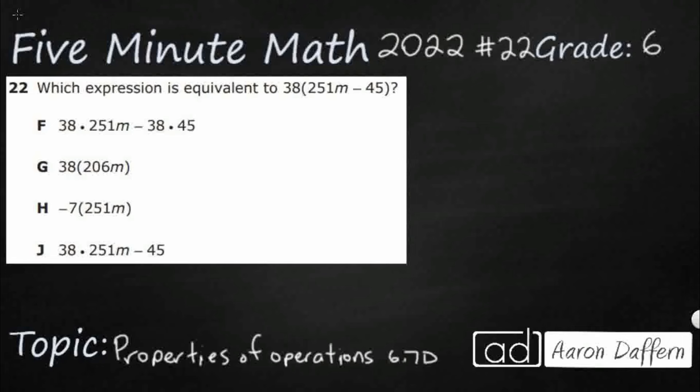So, we have an expression here, 38 times parentheses 251m minus 45, just random stuff. We need to find an equivalent expression. We don't actually need to solve it, though we could if we really wanted to, but what we need here is to figure out which one is equivalent.